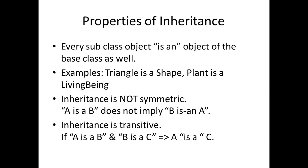Let's look at some properties of inheritance. Every subclass object is also an object of the base class. For example, triangle is a shape, plant is a living being, a warm-blooded mammal is a mammal, and a cold-blooded mammal is also a mammal.